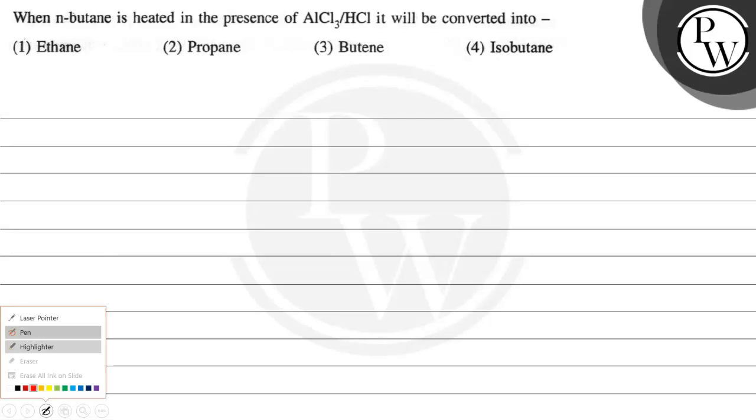Hello guys, let's read this question. When n-butane is heated in the presence of AlCl3 and HCl, it will be converted into—and we have four options: ethane, propane, butene, or isobutane.